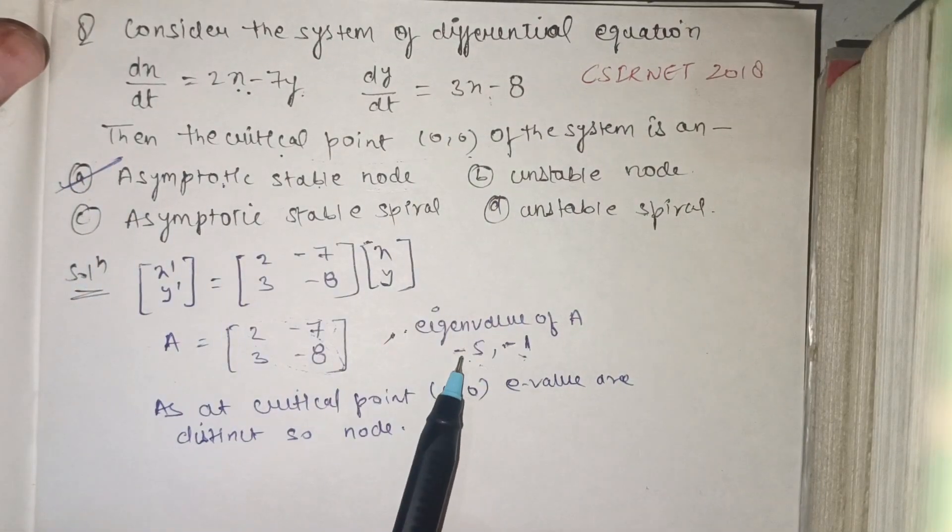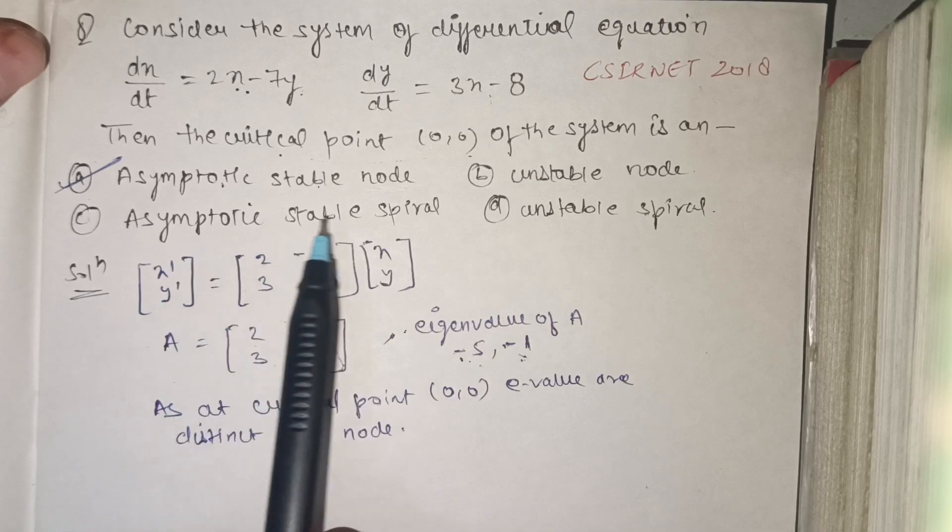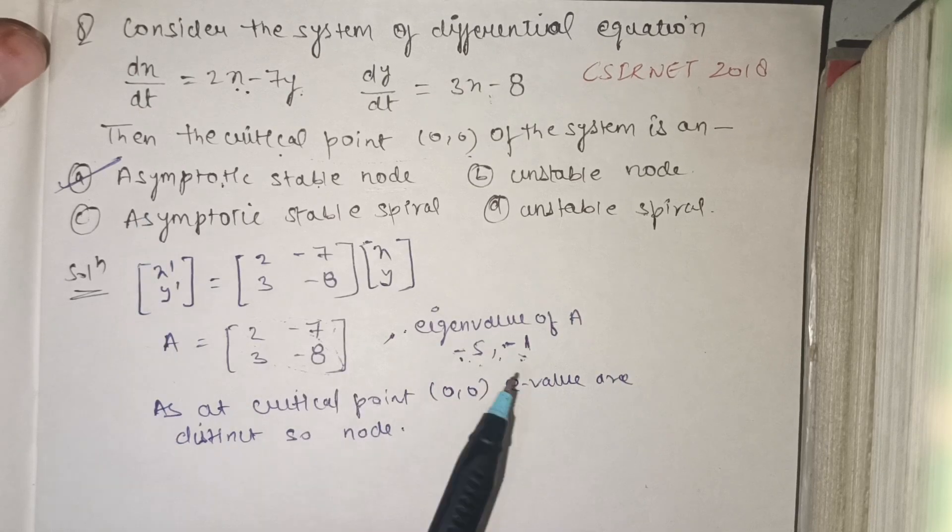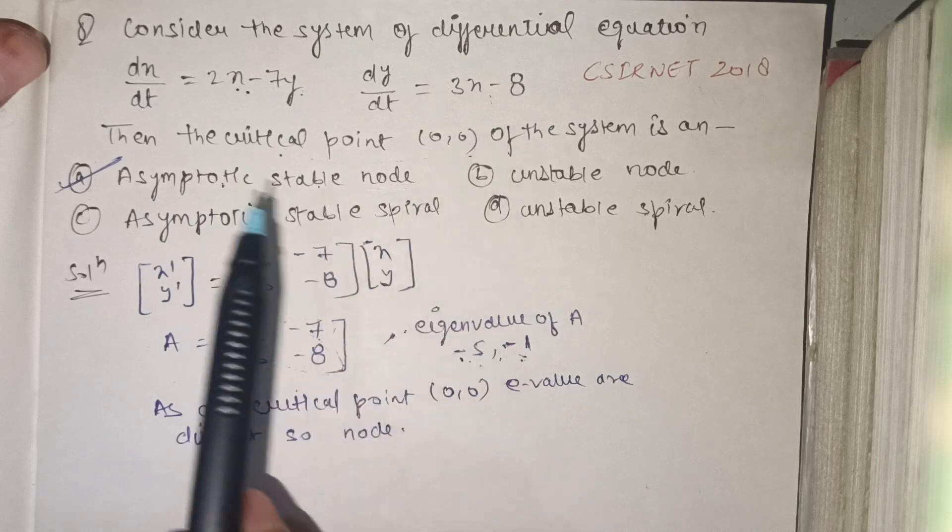If one eigenvalue is positive and the other is negative, then it is unstable. But here both eigenvalues are negative, so this node is stable and it is asymptotically stable. So option A is correct.